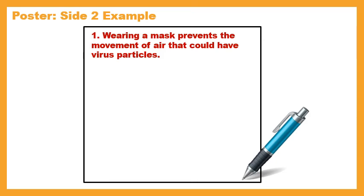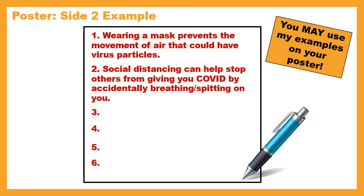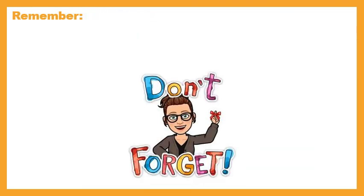Number two: 'Social distancing can help stop others from giving you COVID by accidentally breathing or spitting on you.' If you're far enough apart, those spit particles or aerosol particles that can contain the virus won't be close enough to reach you. Remember, you are explaining all six ways from side one in more detail. You may use my examples one and two, but please think of the rest on your own.